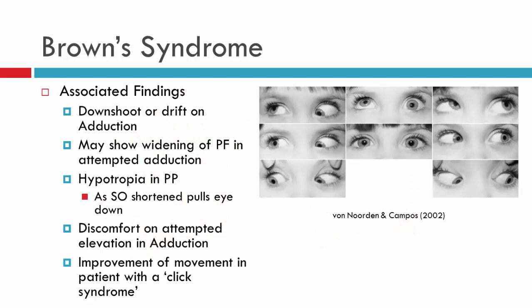There are other findings associated with Brown syndrome. For some patients, we'll see a down shoot or down drift on adduction. Looking at the patient here, they appear relatively aligned in primary position, and then as they look into adduction, there is a down shoot of the left eye, followed by a significant limitation of elevation in adduction. This down shoot doesn't occur in all patients, and classification of these associated signs will be discussed in a separate video.